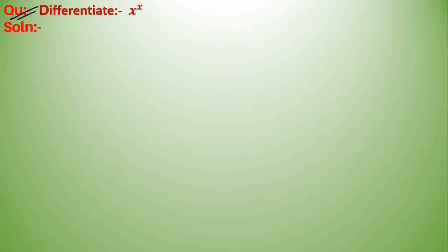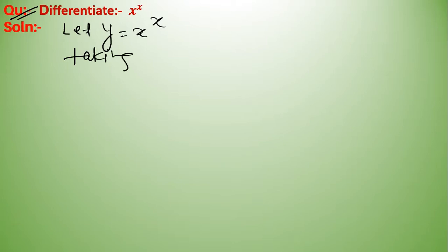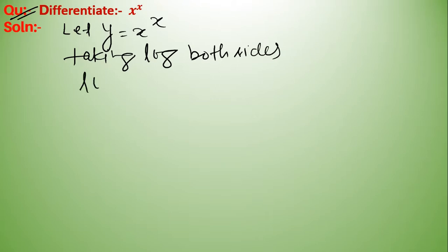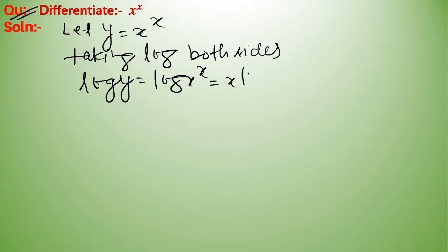Differentiate x to the power x. First of all, we let y equal to x to the power x. Now taking log of both sides: log y equal to log x to the power x, which equals x log x.